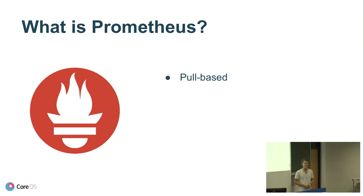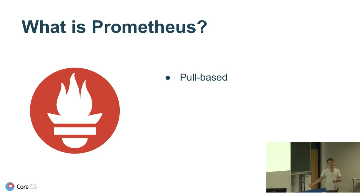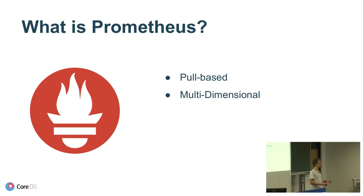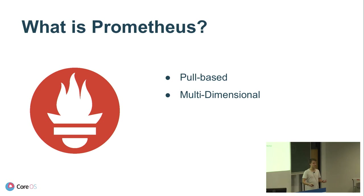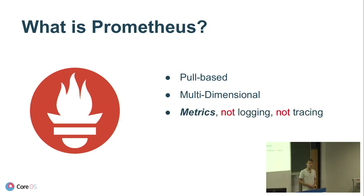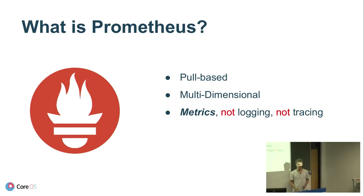A little more technical: Prometheus believes in the church of pull. There are two ideas — pull or push-based monitoring. Prometheus is pull-based, meaning your monitoring system goes to your services and checks if they are right, rather than your services sending health checks to your monitoring system. Prometheus follows a multidimensional data model using key-value pairs called labels, where you can analyze scraped data very nicely. Prometheus is all about metrics — not about logging, not about tracing. You cannot trace packages through your infrastructure with Prometheus.